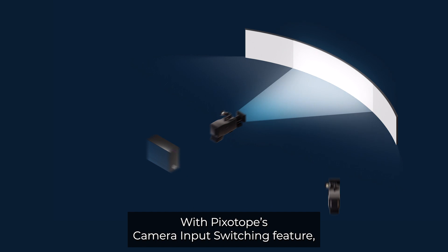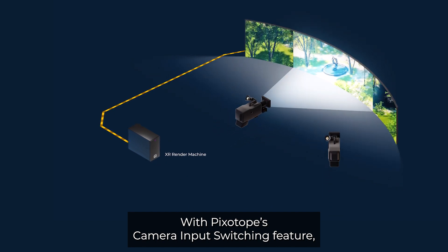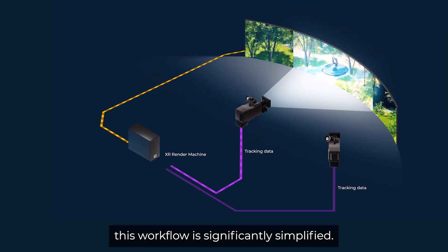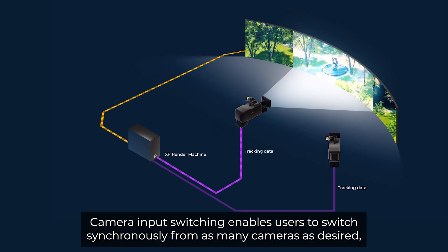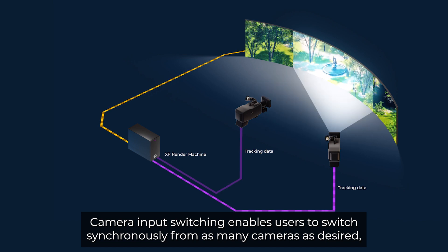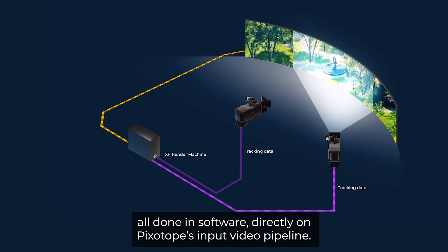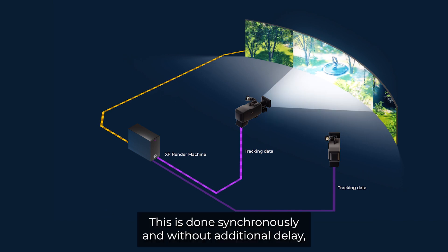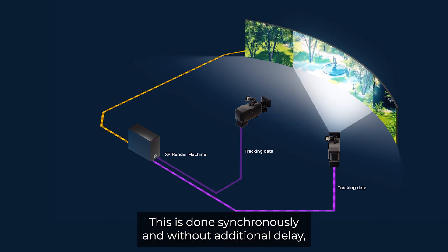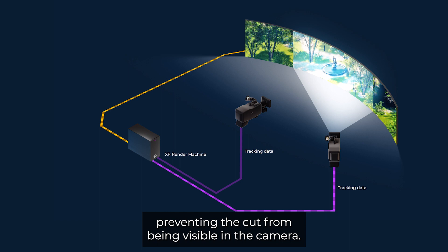With Pixitope's camera input switching feature, this workflow is significantly simplified. Camera input switching enables the user to switch synchronously from as many cameras as desired, all done in software, directly on Pixitope's input video pipeline. This is done synchronously and without additional delay, preventing the cut from being visible in the camera.